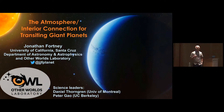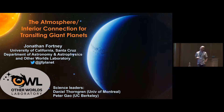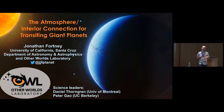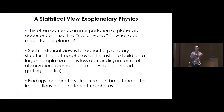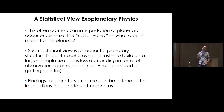My talk today is about planetary atmospheres and planetary interiors and the connection between them. This is what you might call a statistical view of planetary physics. A lot of times in planets we talk about the physics of particular objects or try to make connections between two or three objects, but this is really about trying to make connections between a large number of objects — for instance, how we can explain the radius valley by looking at a collection of planets.